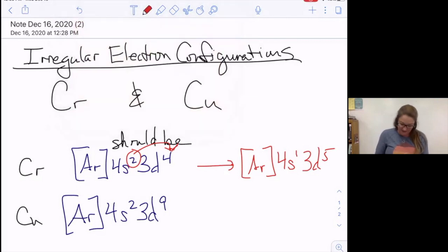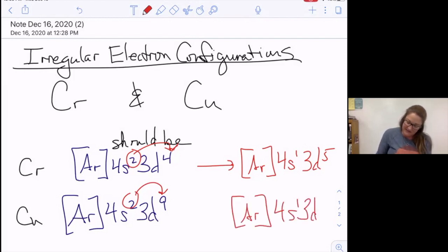But again, the same sort of thing happens. One of these gets promoted to there and instead we have 4s1 3d10. Again, the reasoning is because there's an enhanced stability with a half full or completely full d subshell.